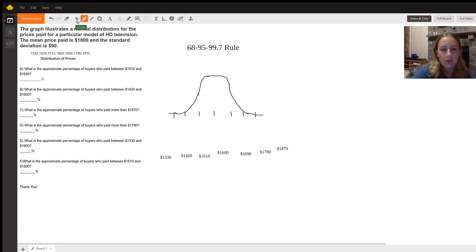So first, we want to look at what the middle of the curve is going to be. And that's going to be $1,600, because the mean value is always the middle of the curve. One standard deviation above $1,600 is just going to be $1,600 plus $90, based on the question, which is $1,690.